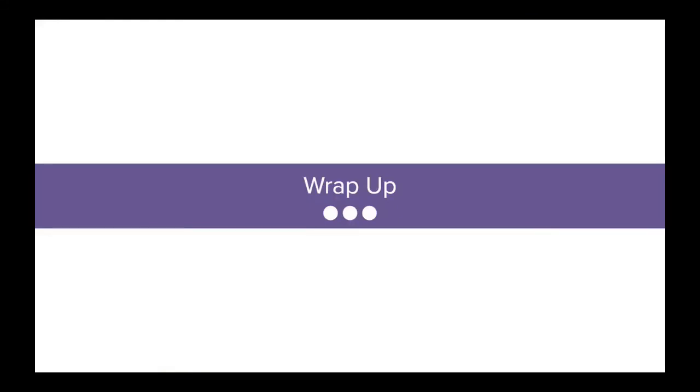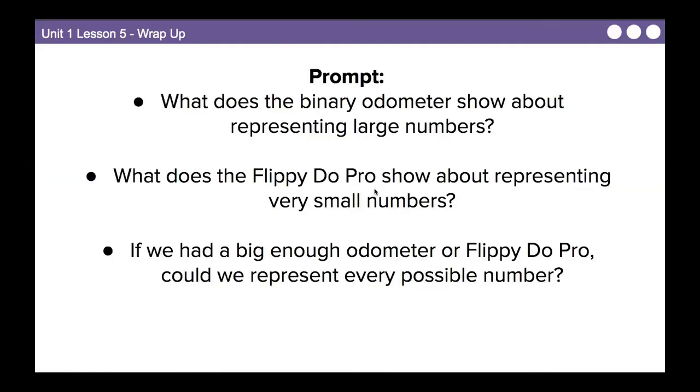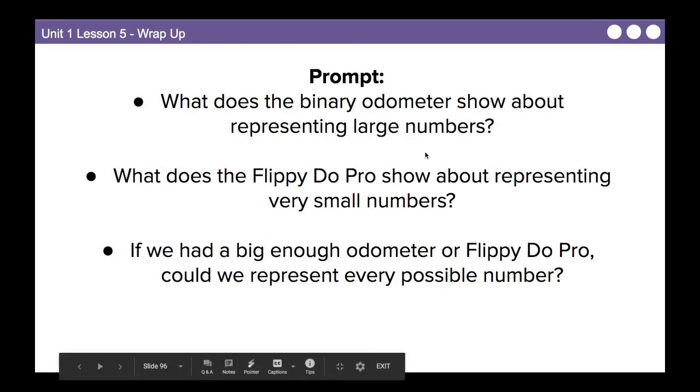Let's wrap up. So the most important takeaway from this lesson is to understand that bits can represent a limited amount of information. Remember in the previous lesson I said if you had two signals, you could communicate, what you could communicate is unlimited, but it's only limited by the amount of storage that you have to store all those bits. So that's kind of what we were getting into today. So here are a few prompts here. Write the answers to these in your journal. What does the binary odometer show about representing large numbers? What does the Flippy-Doo Pro show about representing very small numbers? And if we had a big enough odometer or Flippy-Doo Pro, could we represent every possible number? We won't discuss those in this video. Write your answers down to those in your journal.